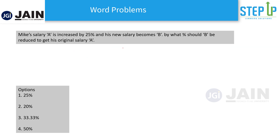The first question: Mike's salary A is increased by 25% and his new salary becomes B. Now if you want to reduce his salary back to the original salary A, by what percentage should you reduce? Many people say 25% — that is absolutely wrong. The base has changed, so we have to be very careful with these questions.